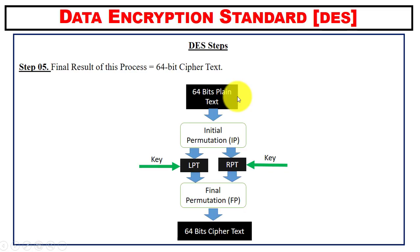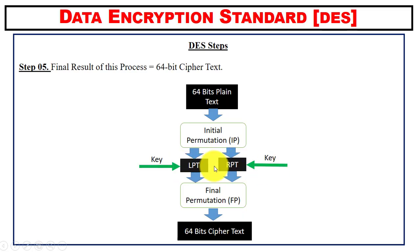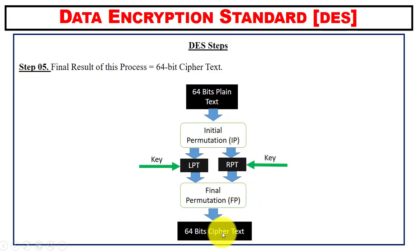To summarize, the process starts with 64-bit plain text that goes through the initial permutation function, then is divided into left and right plain text. We perform 16 rounds on the left and right plain text, followed by the final permutation combining both halves, and the final result is 64-bit ciphertext. That's a short introduction to the Data Encryption Algorithm and how it converts 64-bit plain text into 64-bit ciphertext.